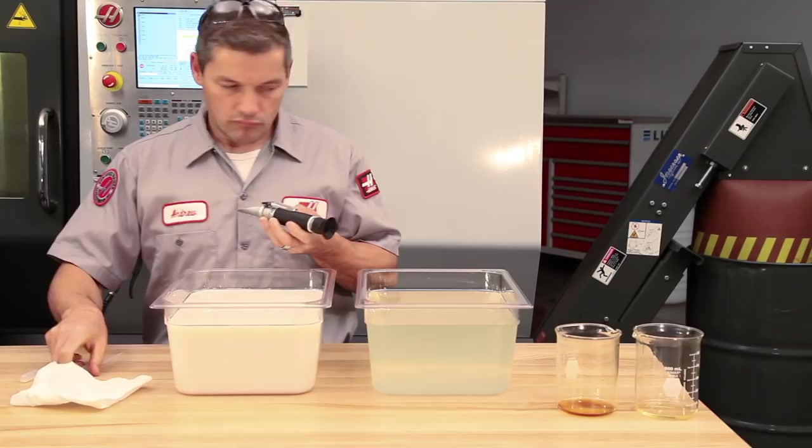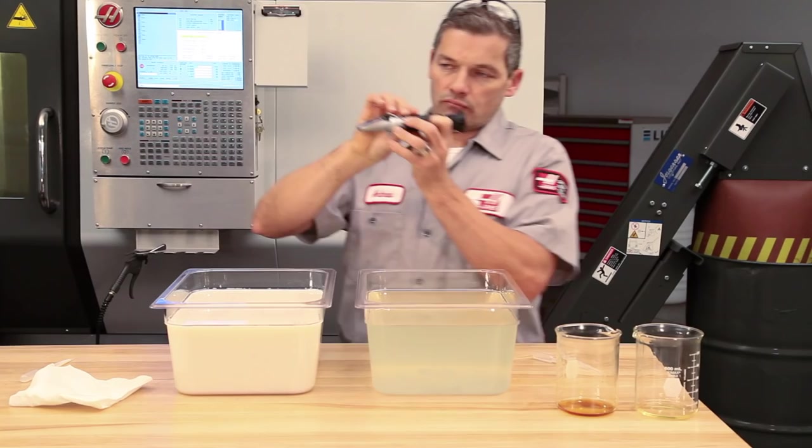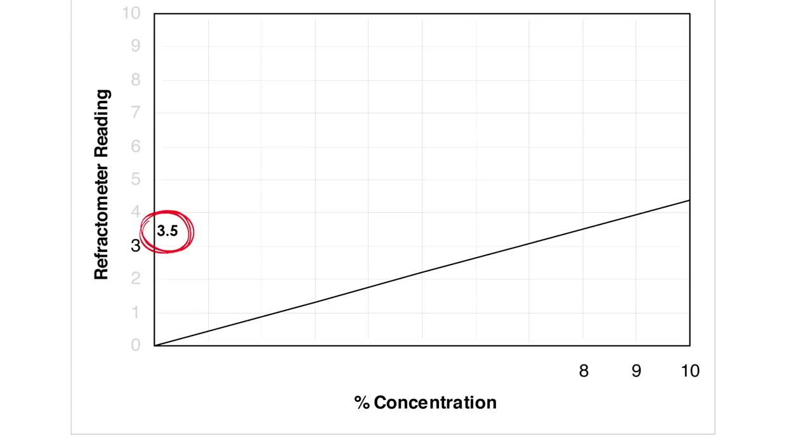The full synthetic coolant, however, shows a reading of 3.5% BRICS. Looking at the chart for this coolant, 3.5% BRICS equals 8% actual concentration. The ratio of this coolant is about 1 to 2.3.